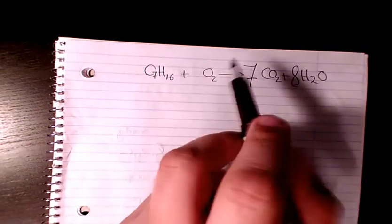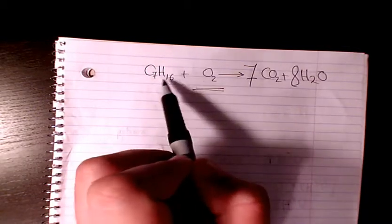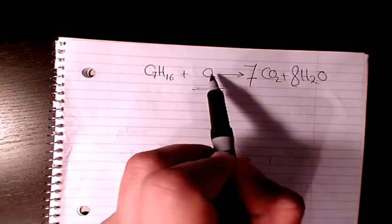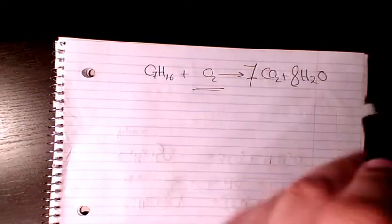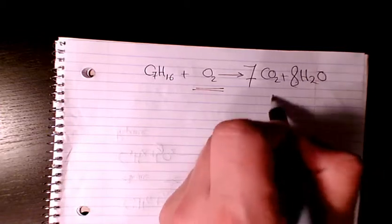What about oxygen? We have only one chemical that has oxygen and it is O2. We have eight oxygen and 14 oxygen is going to be 14 plus 8.